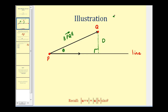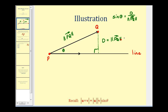If we take a look at this right triangle, we can state that sine theta equals opposite over hypotenuse, or that sine theta equals D divided by the magnitude of vector PQ. Solving for D, we get D equals the magnitude of vector PQ times sine theta.